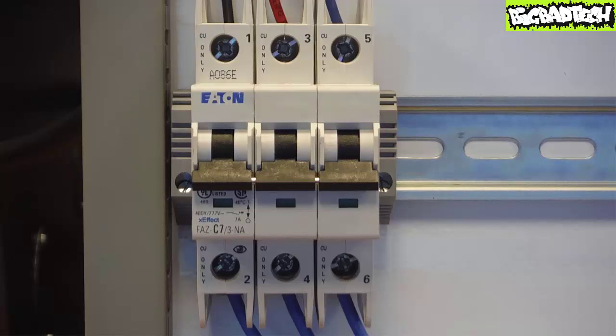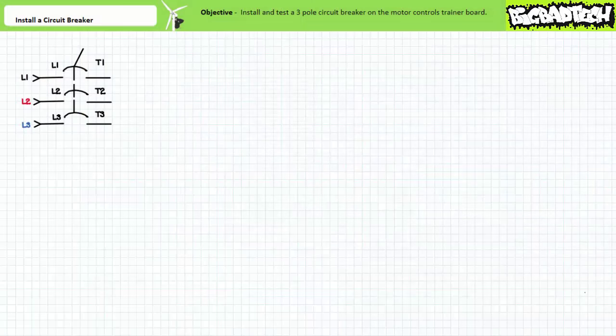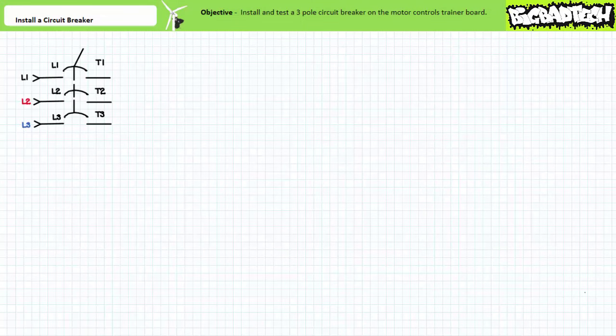Once the cause of the short circuit event has been inspected or removed the circuit breaker can be reset. Cost for the setup was pretty minimal. After all it's just a circuit breaker. I'll try to include the part numbers in the information section below this video.